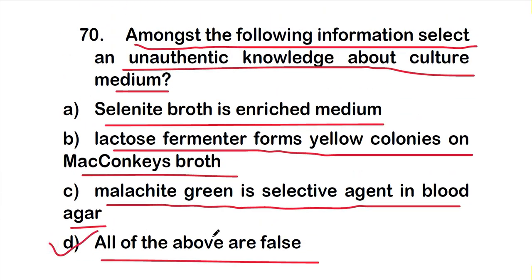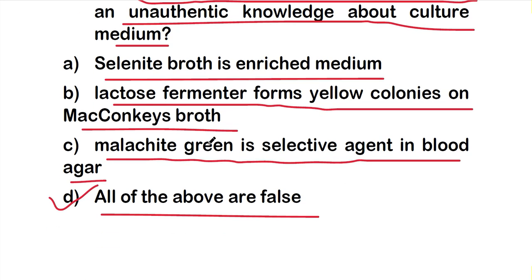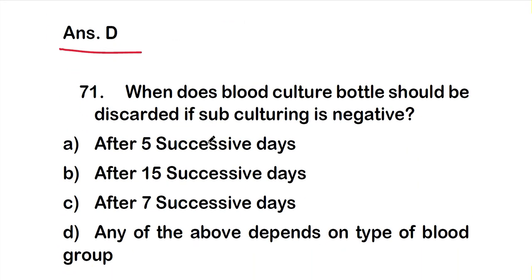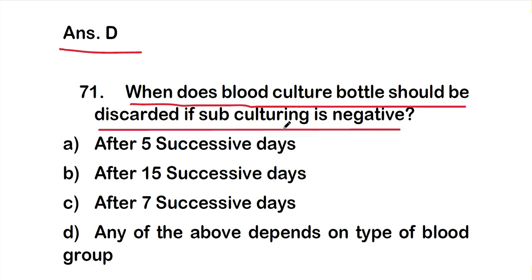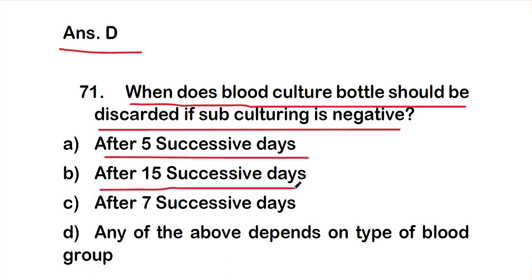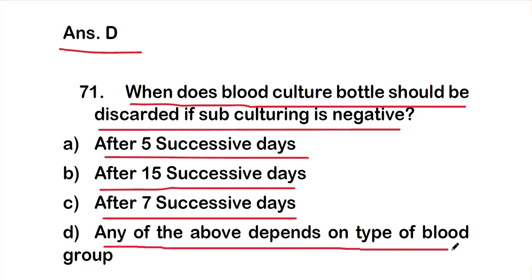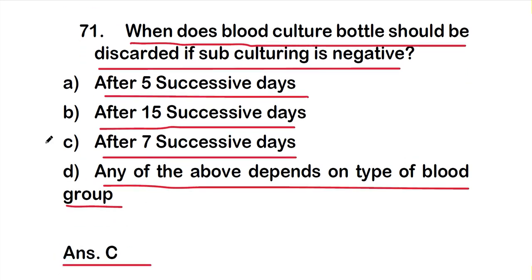Question number 71: When should a blood culture bottle be discarded if subculturing is negative? Options are: A) after 5 successive days, B) after 15 successive days, C) after 7 successive days, D) depends on blood group. The right answer is option C — after seven successive days, the blood culture bottle should be discarded if subculturing is negative.